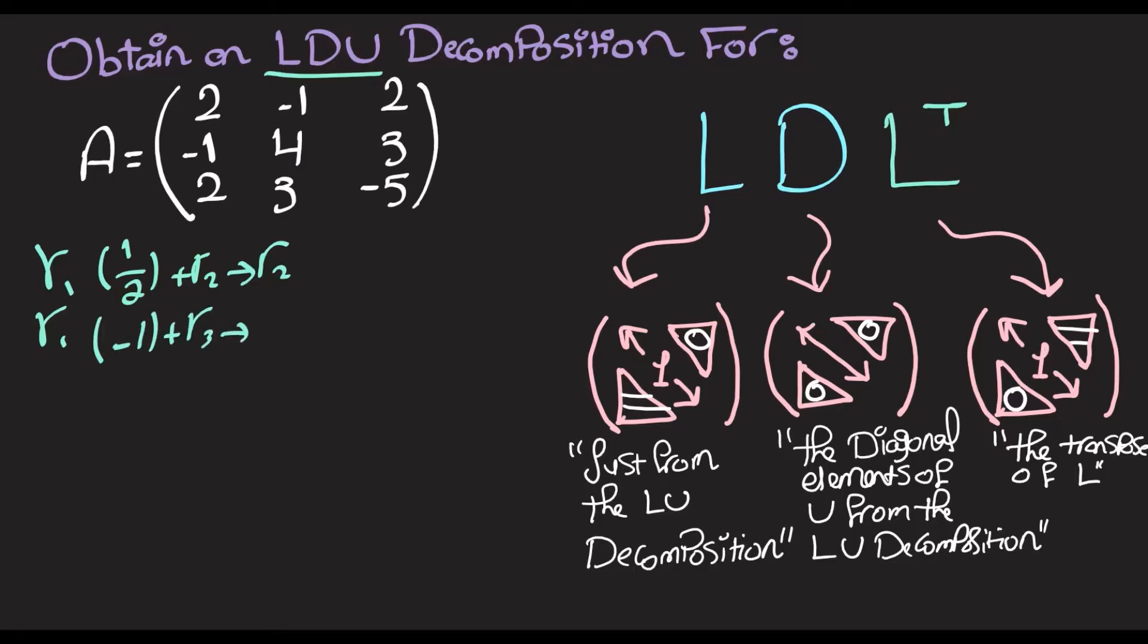So A becomes 2, negative 1, 2. Here I get 0, 3.5, and 4. Down here I get 0, 4, and negative 8. Sorry, this is going to be negative 7.